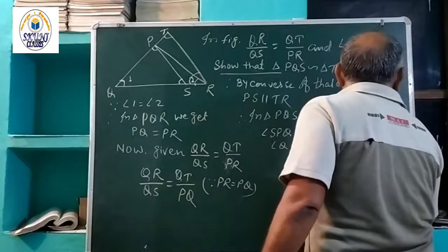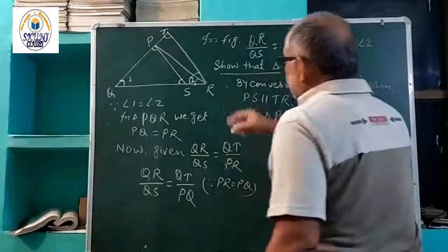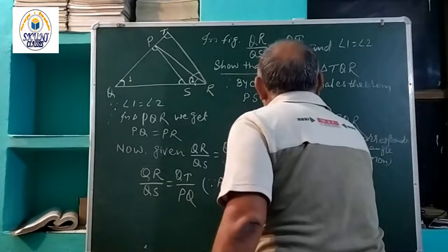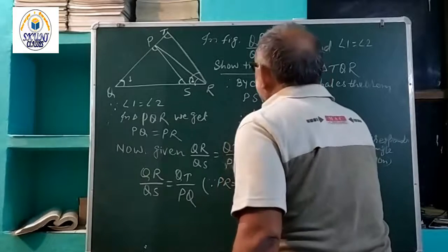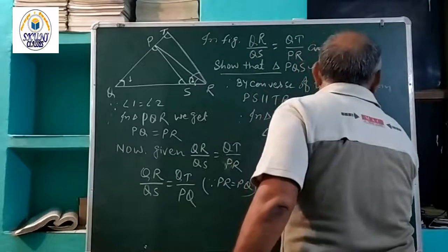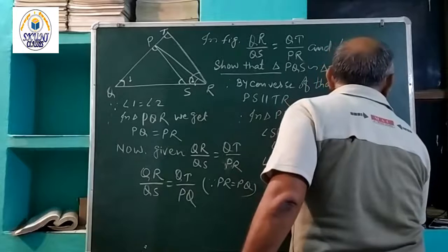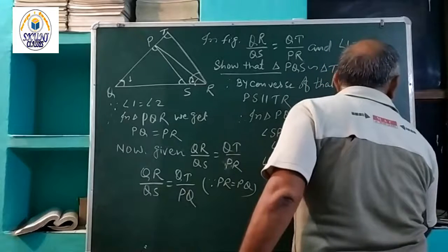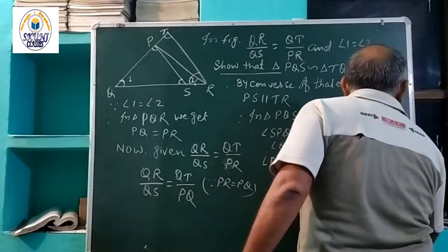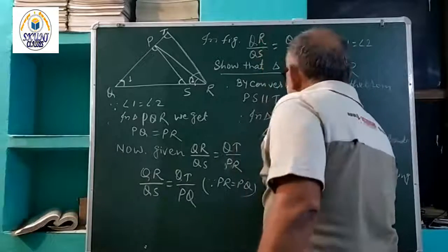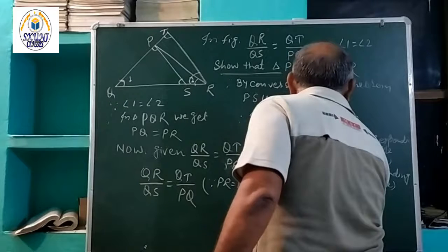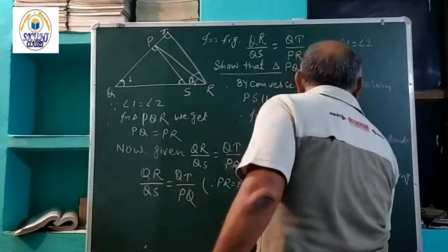Angle PSQ is equal to angle PRQ, which is equal to angle TQR. These are corresponding angles. So by angle-angle-angle criterion, what do we get?